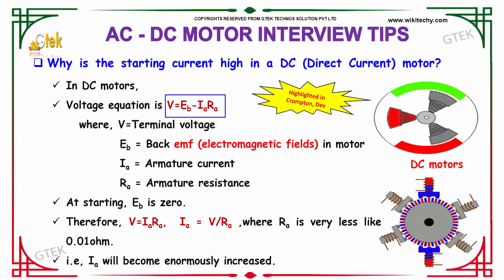Here V is the terminal voltage, EB is the back EMF, IA is the armature current, and RA is the armature resistance.